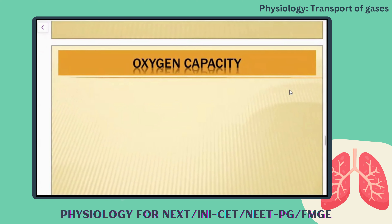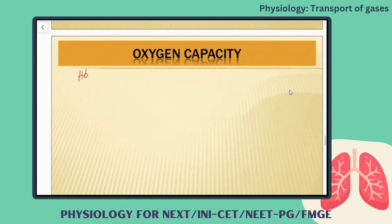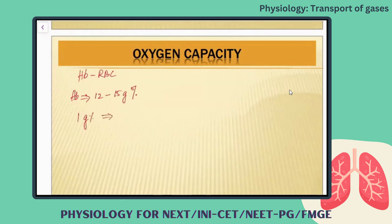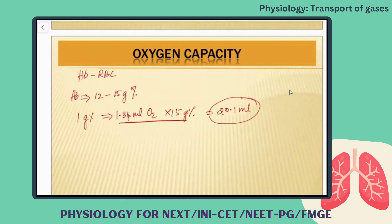Oxygen is carried by hemoglobin, which is present in the RBC. The normal hemoglobin value is 12 to 15 gram percentage. One gram percentage of hemoglobin carries 1.34 ml of oxygen. So if you consider 15 gram percentage as the value of hemoglobin, you will get nearly 20.1 ml — that is the oxygen carrying capacity of the hemoglobin.